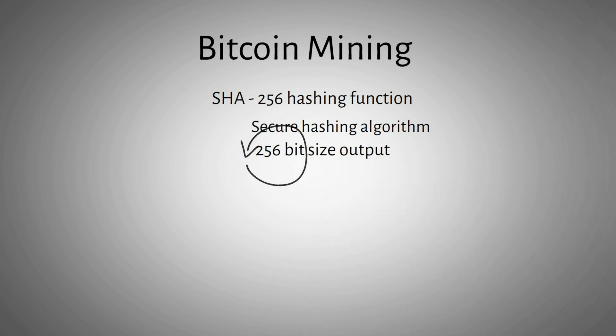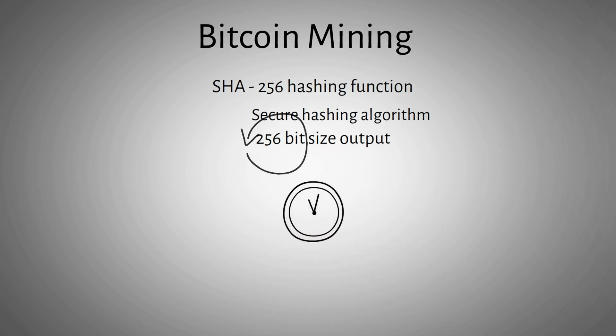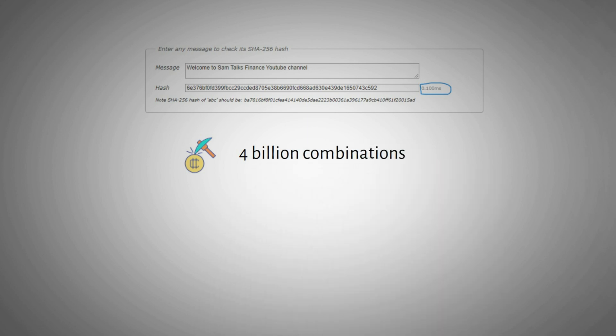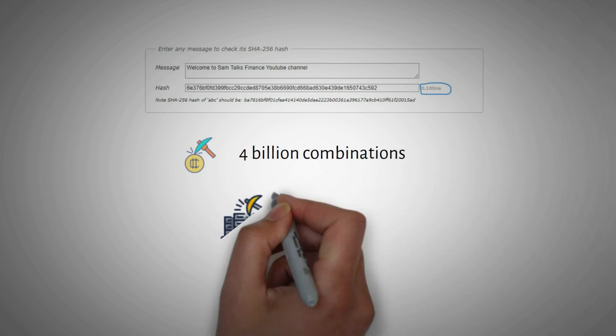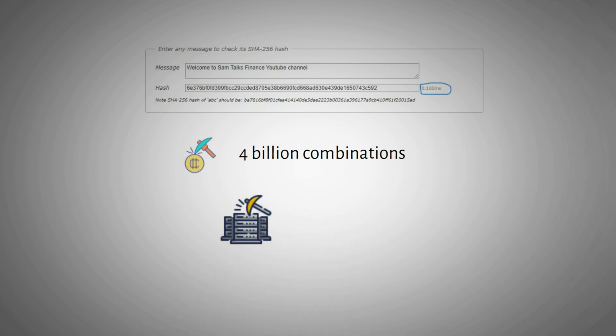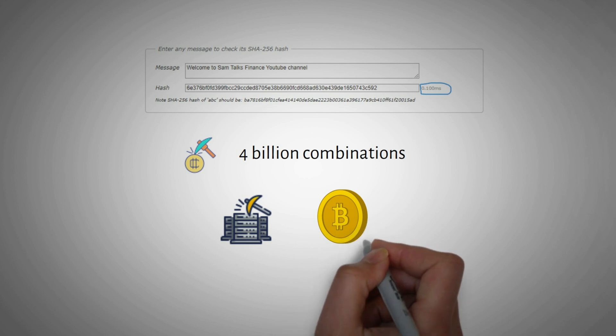We can calculate this hash. For example, hashing a simple text takes roughly 0.1 milliseconds. Bitcoin miners try to mine a block by computing these hashes. If a miner successfully creates a valid block, it is accepted by other nodes on the network. After that, the miner receives a reward for solving the puzzle first.